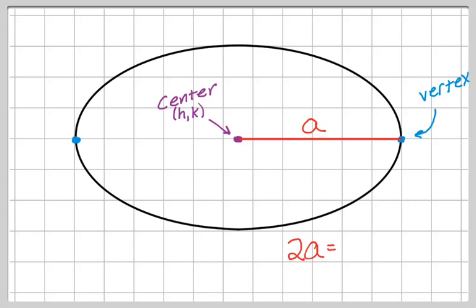The distance 2a actually has a special name. It's called the major axis. Major because it's bigger than the other one.